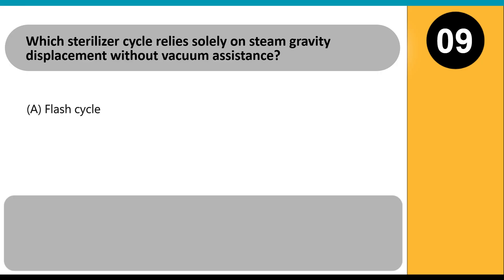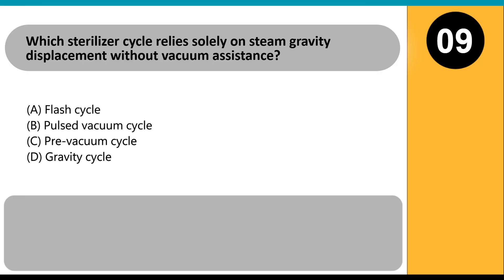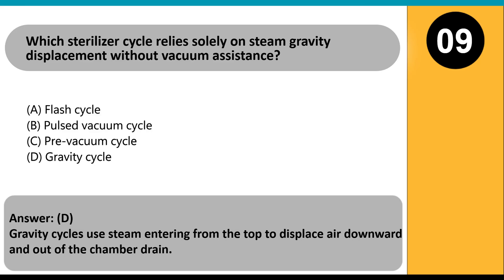Which sterilizer cycle relies solely on steam gravity displacement without vacuum assistance? A. Flash cycle. B. Pulsed vacuum cycle. C. Pre-vacuum cycle. D. Gravity cycle. Answer: D. Gravity cycles use steam entering from the top to displace air downward and out of the chamber drain.